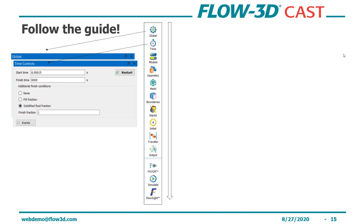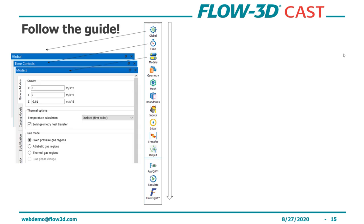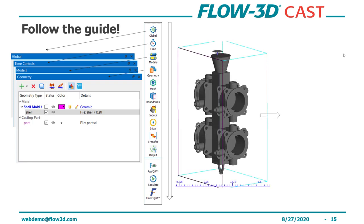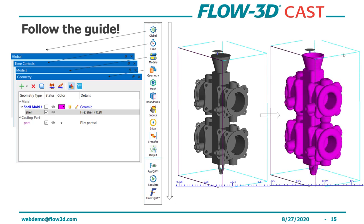Looking at the process toolbar in more detail: you start with global parameters — for example, the process type is investment casting, the sub-process is solidification, the alloy is carbon steel. Then there's time control — in this case we're restarting from a previous fill simulation. Then the physical models are turned on for you for this specific application type. The next step is geometry, where you create a shell mold using the preloaded shell creation tool.